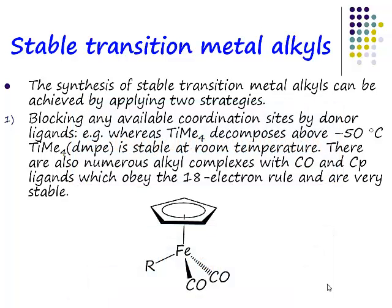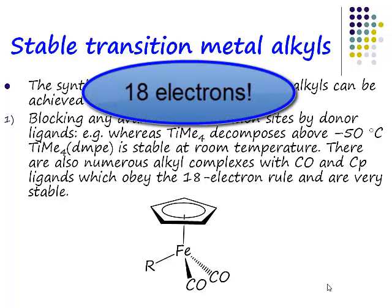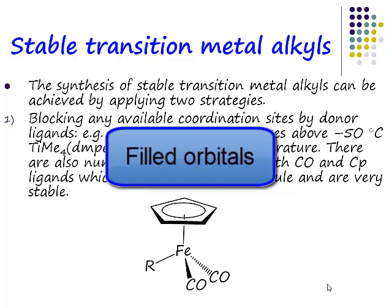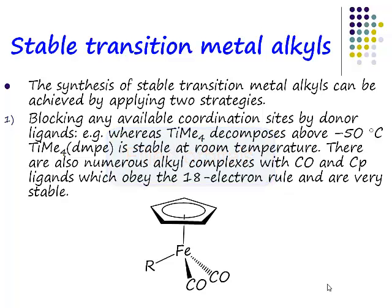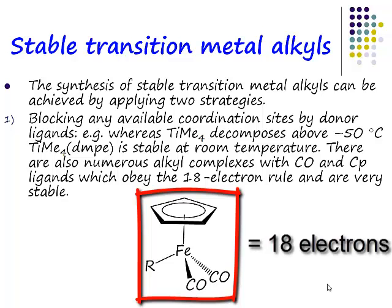How can one avoid that happening? There are two or more strategies. One of the strategies you can employ is to essentially go to 18 electrons. If you go to a transition metal alkyl complex that has 18 electrons, essentially what you've done is said all the orbitals are filled. If all the orbitals are filled with electrons, then there's no way that the alkyl group can come round in a beta-agostic interaction and bind to the transition metal centre. So if you have a complex like this, it's an 18-electron complex and it's perfectly stable.